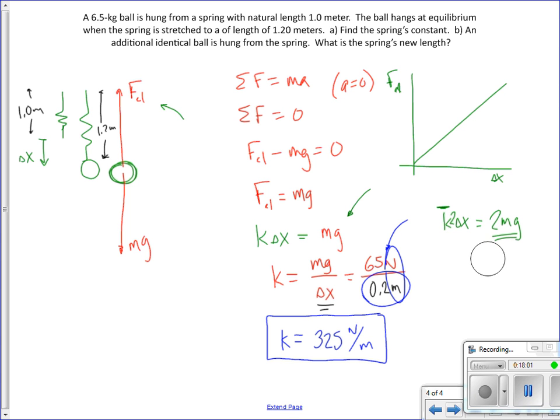If the object is now twice as heavy, since there's an additional identical ball, it's going to stretch it twice as far. But our delta x is now 0.4 meters. It was 0.2 meters before. So what's the new length of the spring? Well, the natural length was 1 meter. It's stretched 0.4 meters. The new length is 1.4 meters. That's as hard as they get. This is everything you need to know about springs for now. Eventually we talk about how much energy springs store, but not today. Adios.